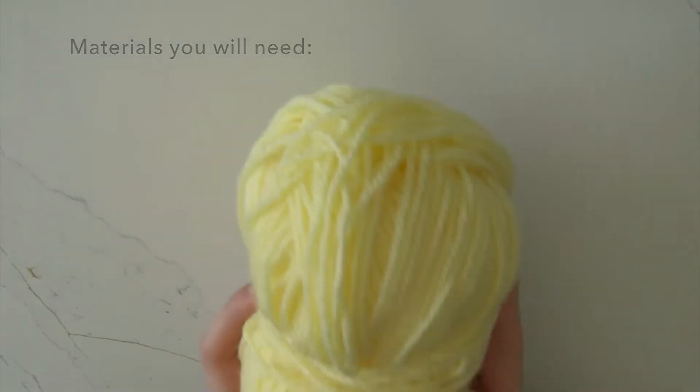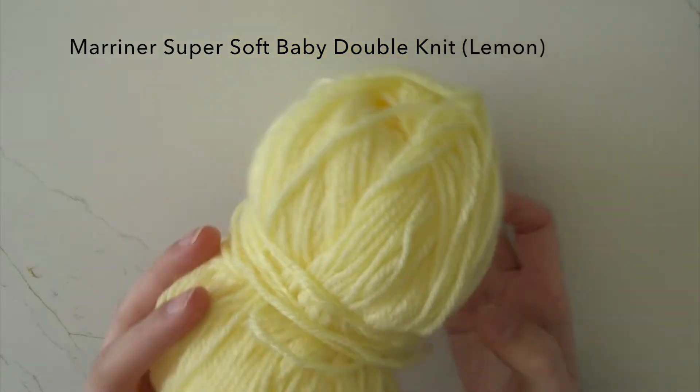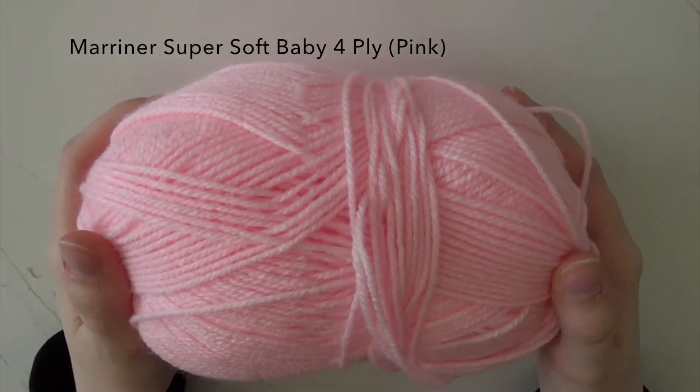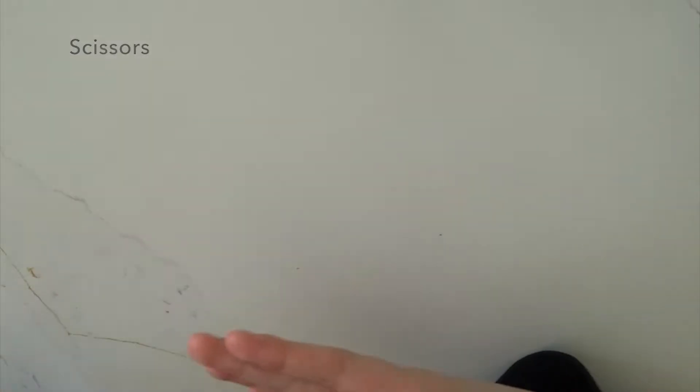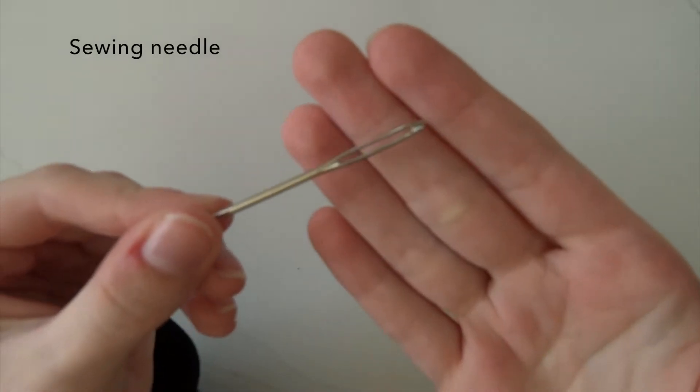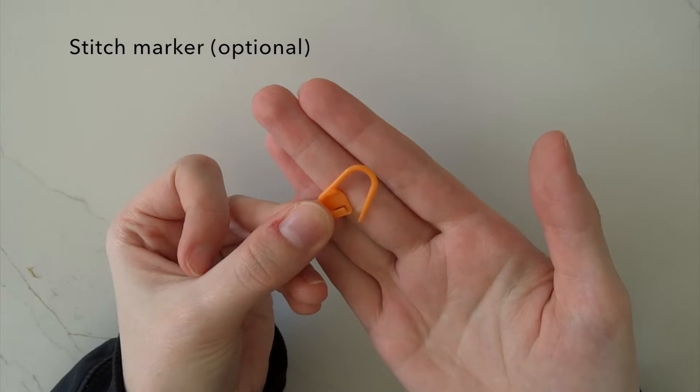Hey everyone, so for this flower applique you're going to need two different colors of acrylic yarn. I've just used this baby yarn. You need some scissors, a sewing needle, and a stitch marker if you choose to use one - it's optional - and a 3 millimeter hook.